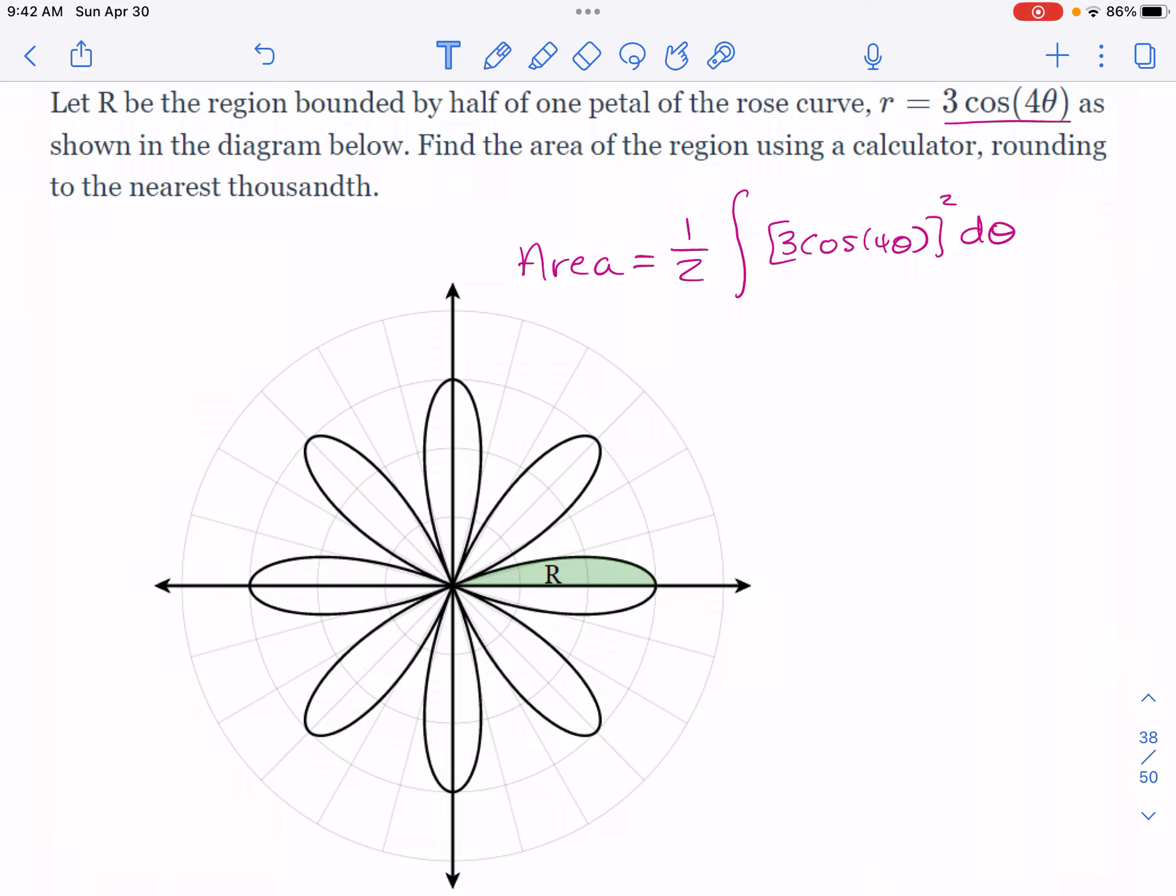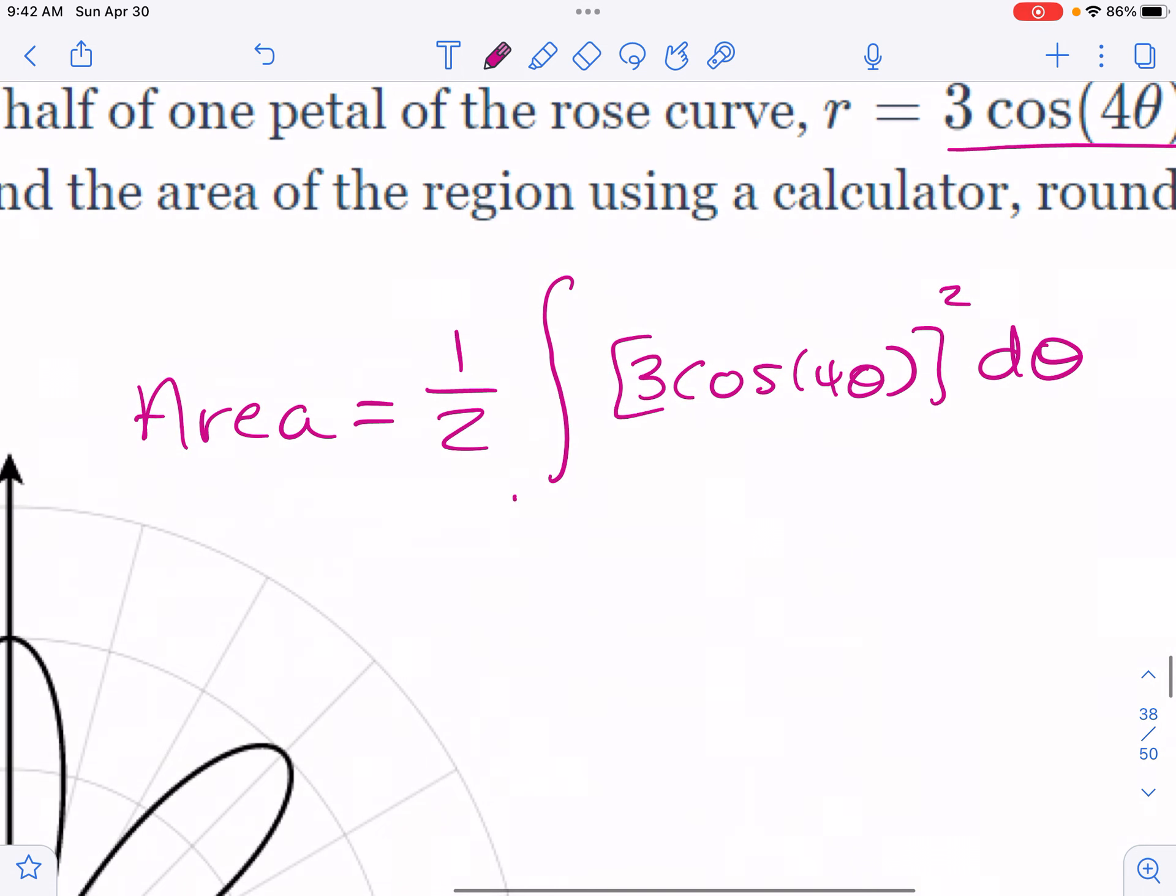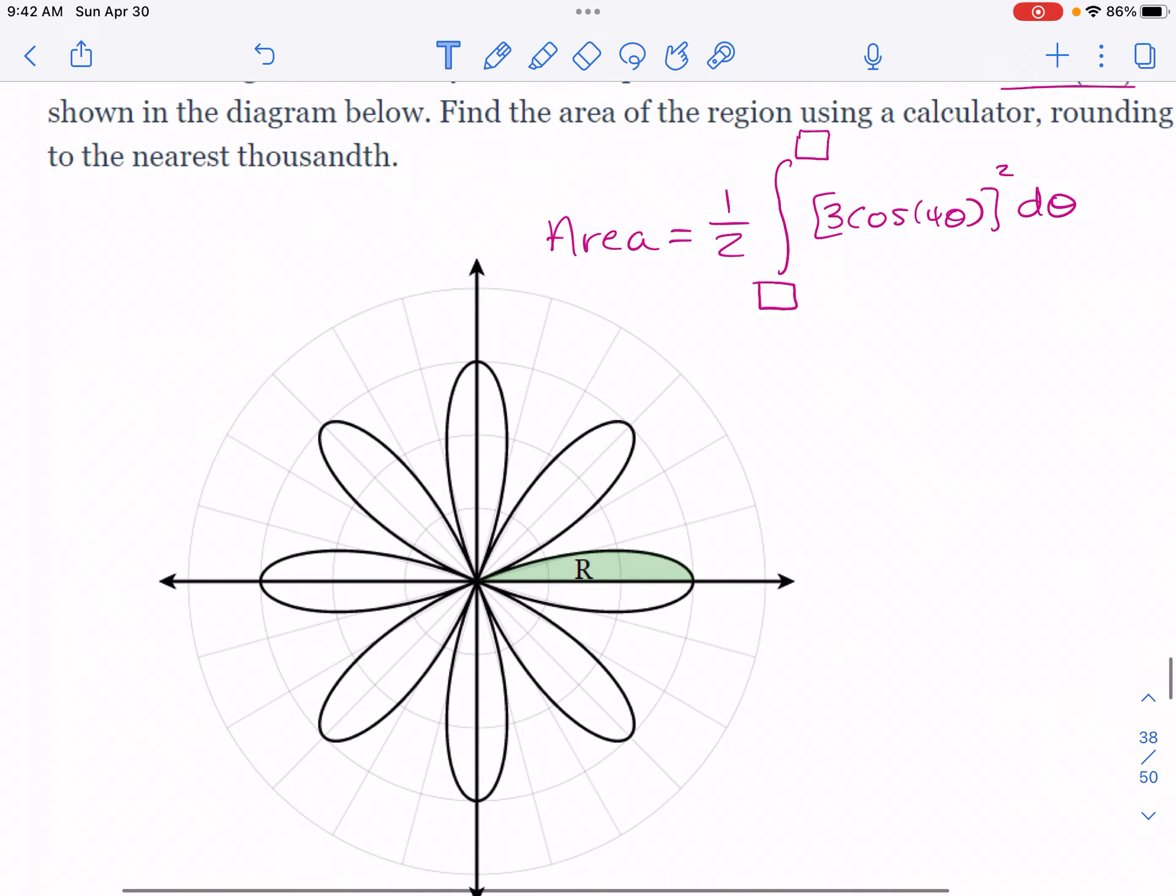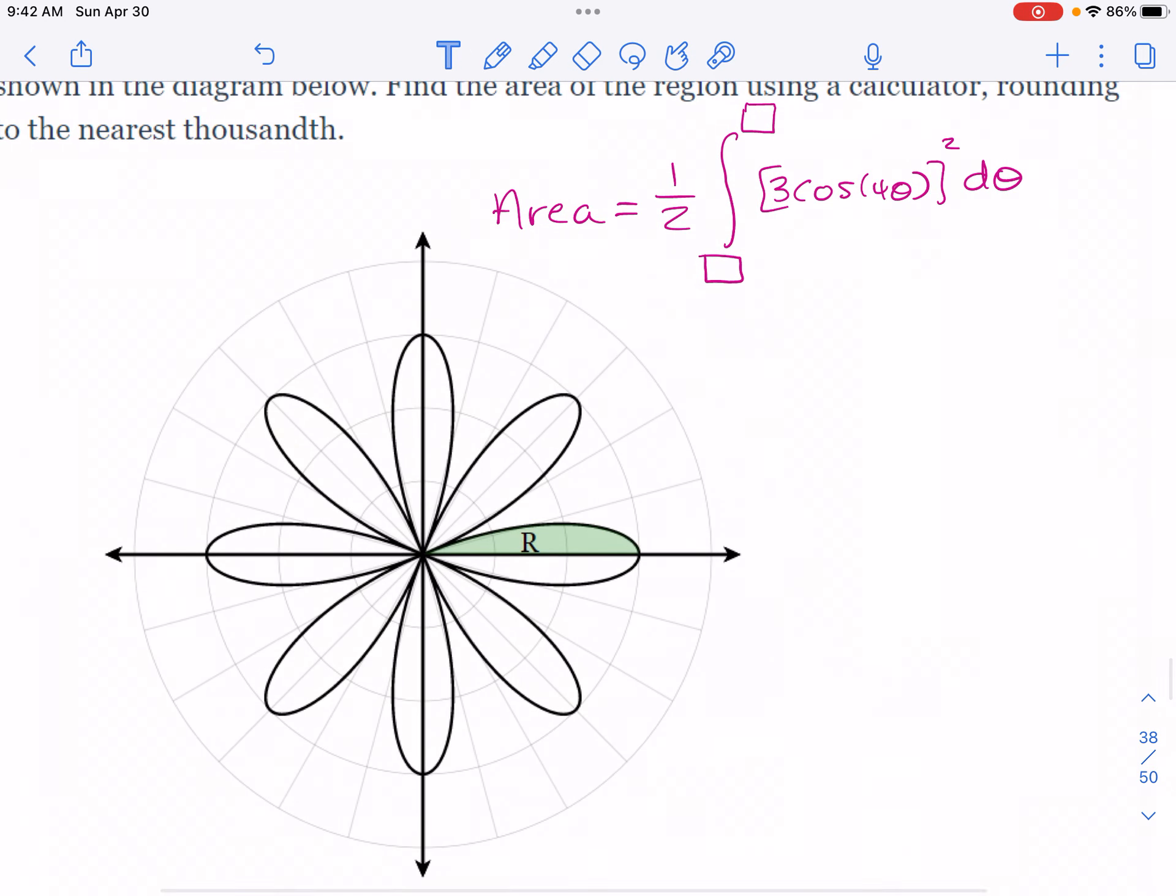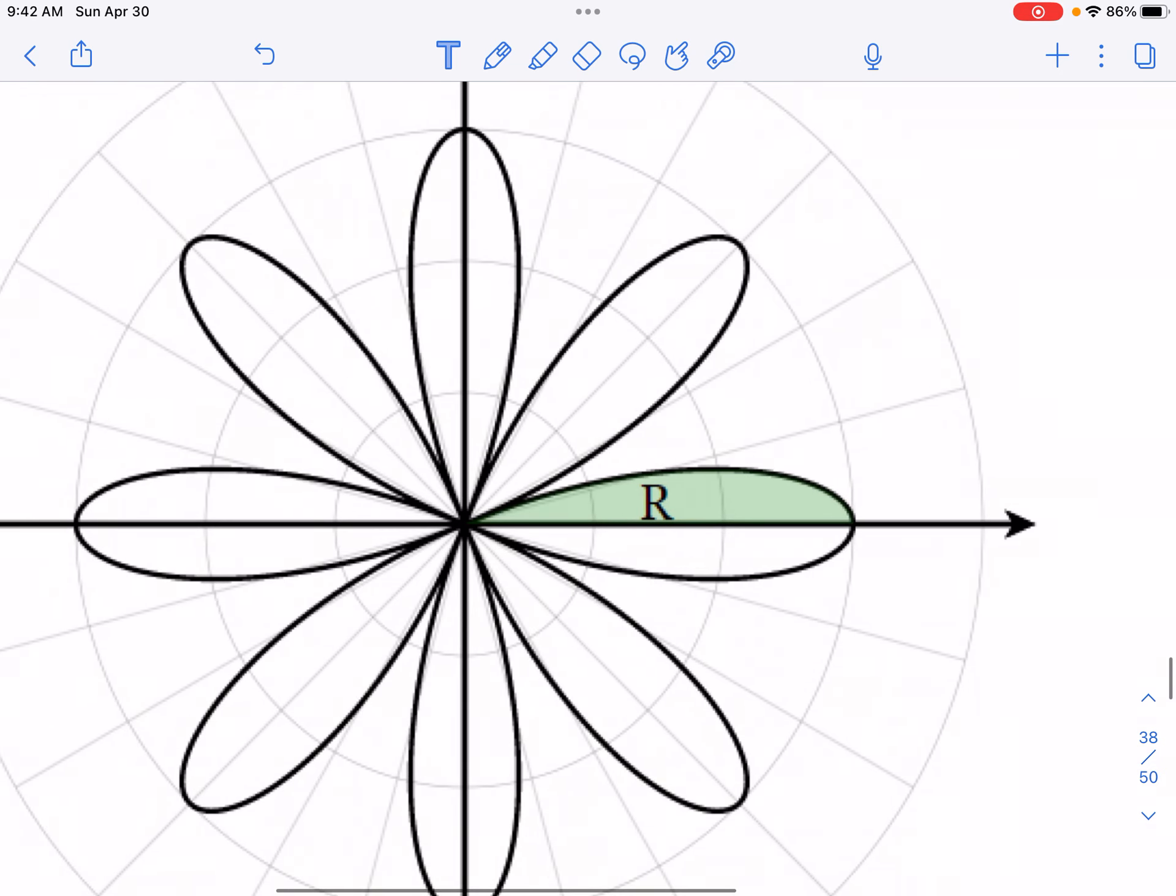What's going to require the most work I think would be the limits of integration—in other words, the angles that belong here and here. Sometimes they're obvious, but sometimes they're not, so we need a strategy for finding those. We want to make sure that we're only using our calculator and we store values to make sure that our errors don't accumulate. If you look here, it seems pretty clear that our lower limit of integration is going to be zero. I'll call this θ₁ = 0.